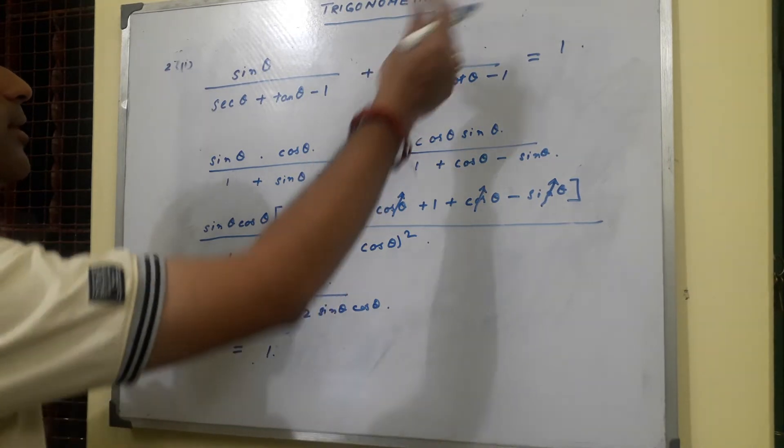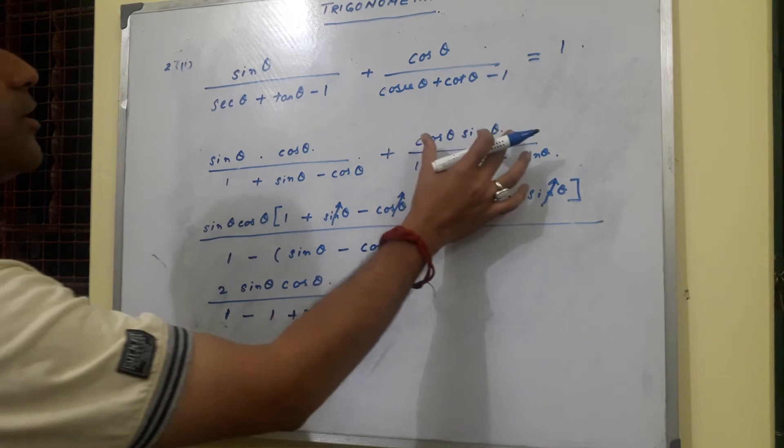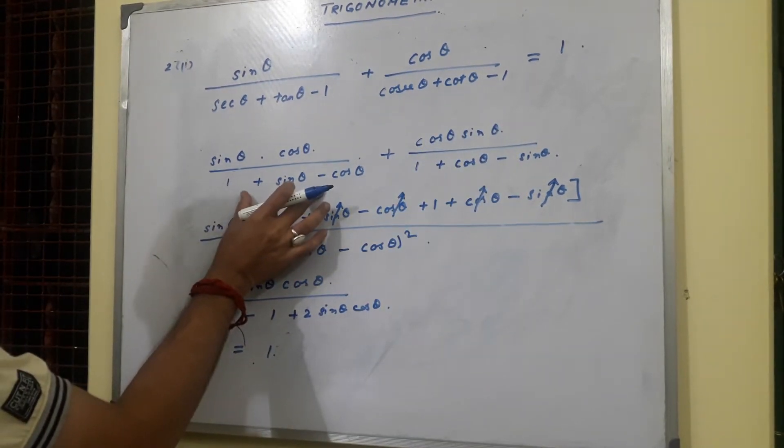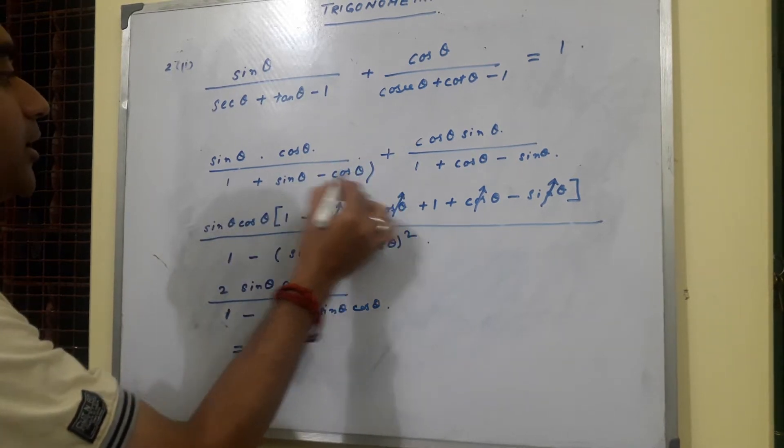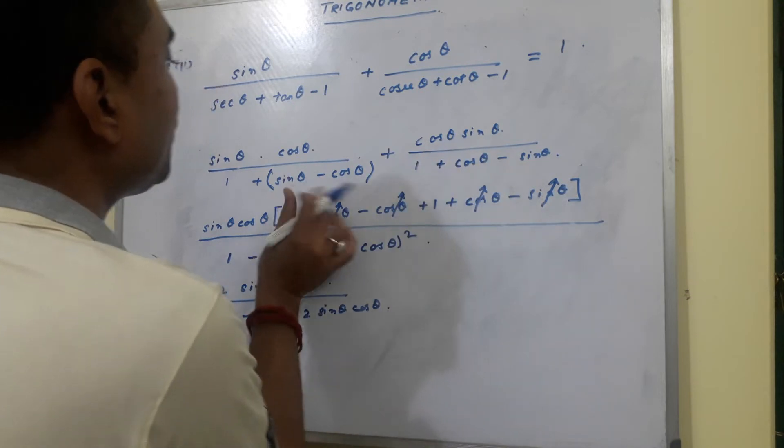Now similarly the second one we will break it up. Now what we get in the numerator is sin theta cos theta for both these terms, and the denominator 1 is 1 plus sin theta plus cos theta, and the other is 1 actually minus of this term.